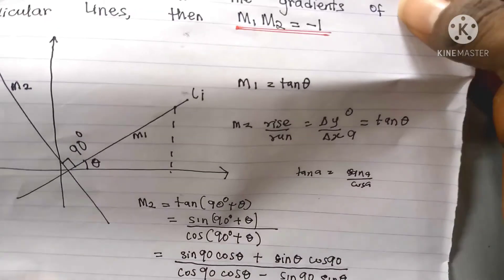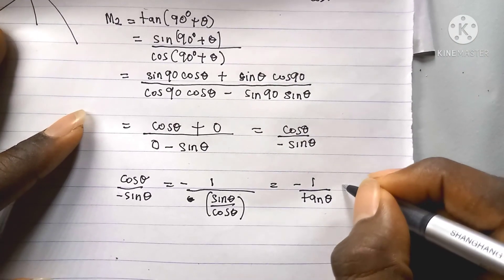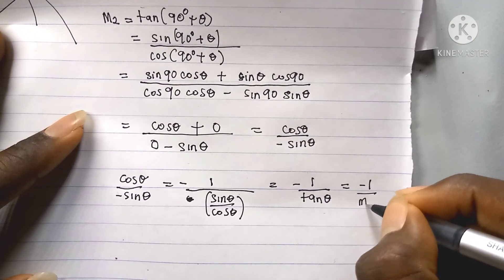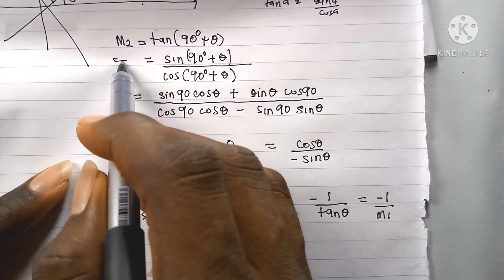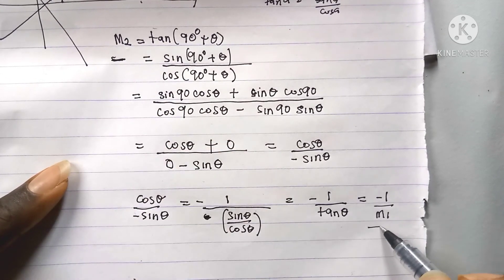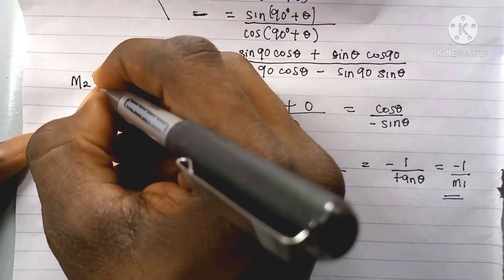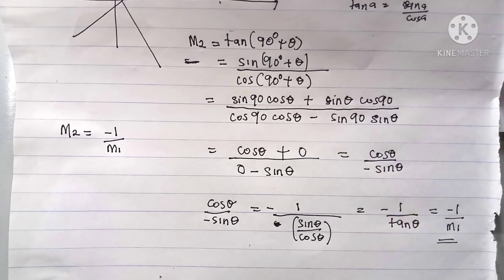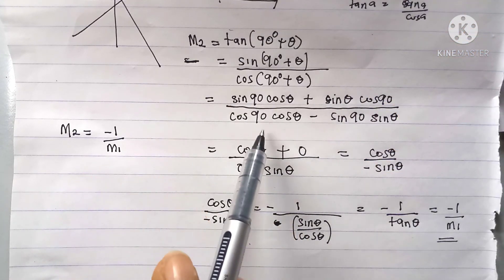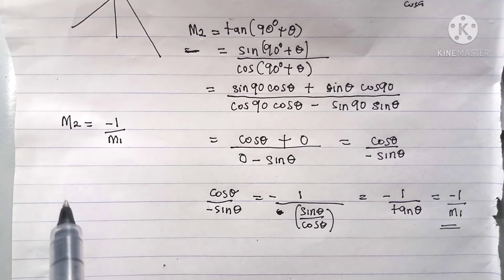From what we said earlier, m1 equals tan θ. Substituting that in, we get m2 equals minus one over m1. So m2 equals minus one all over m1, which implies that m2 times m1 equals minus one.